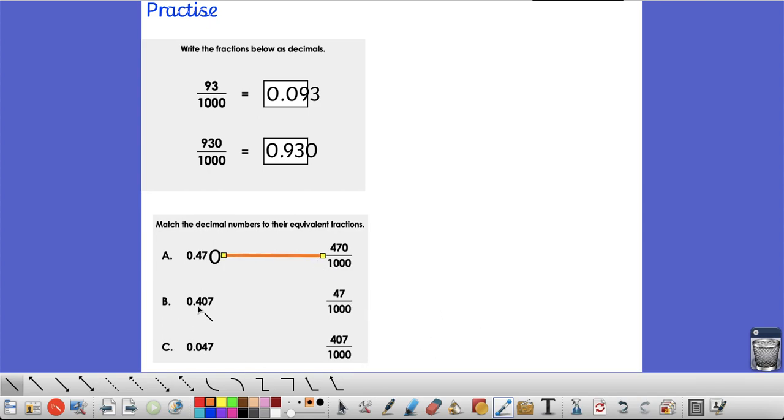The next one is 407 thousandths. So, it matches to this one. And this one here is 0.047 thousandths. So, C matches to the middle one. Well done if you've got those correct.